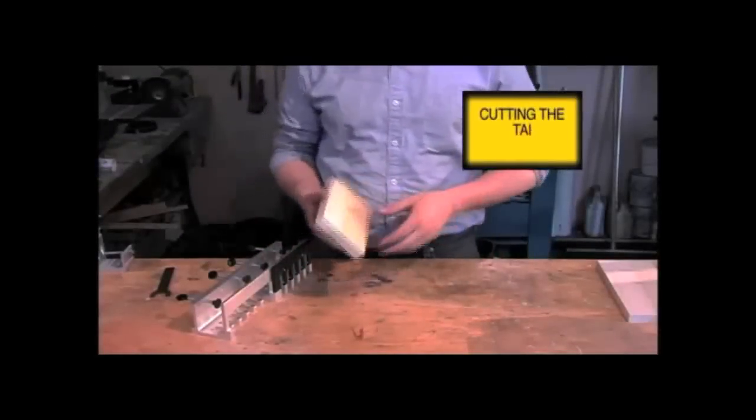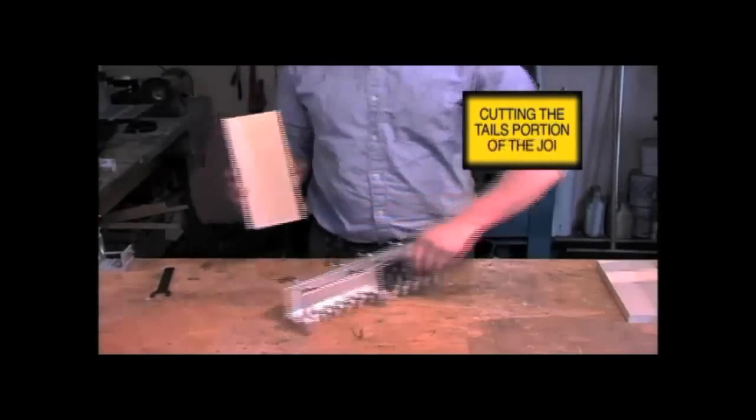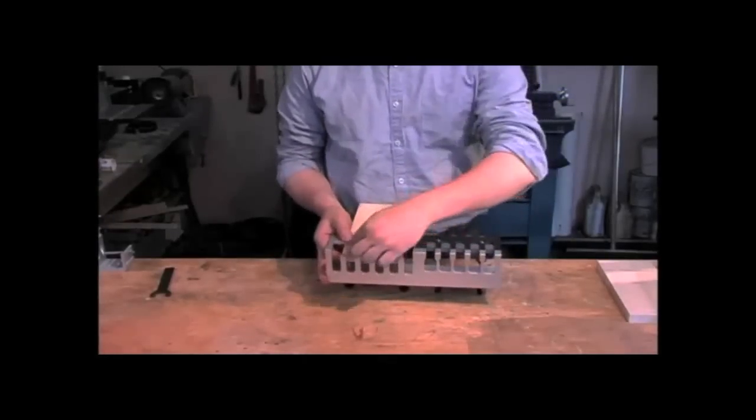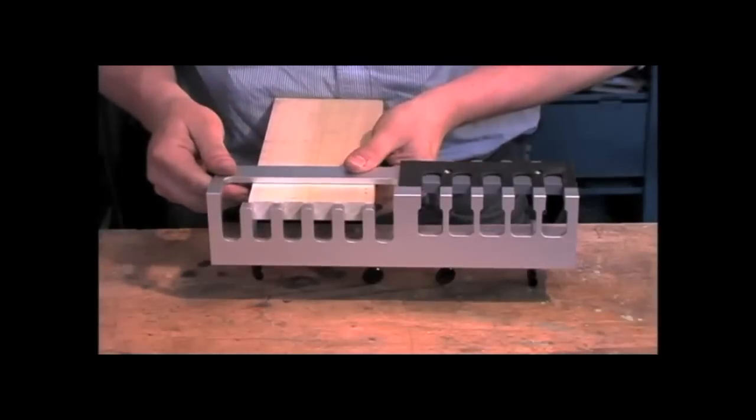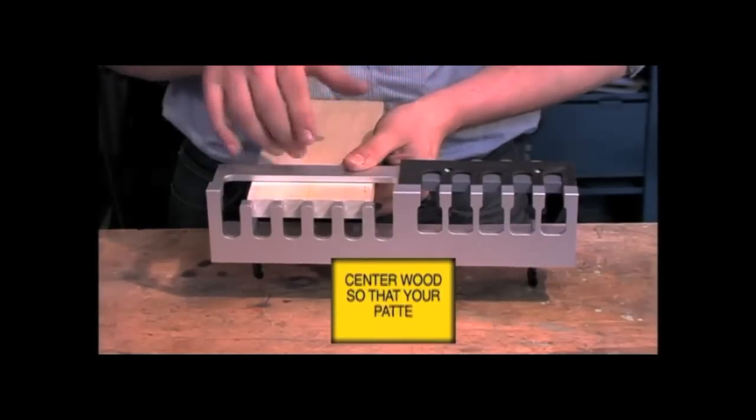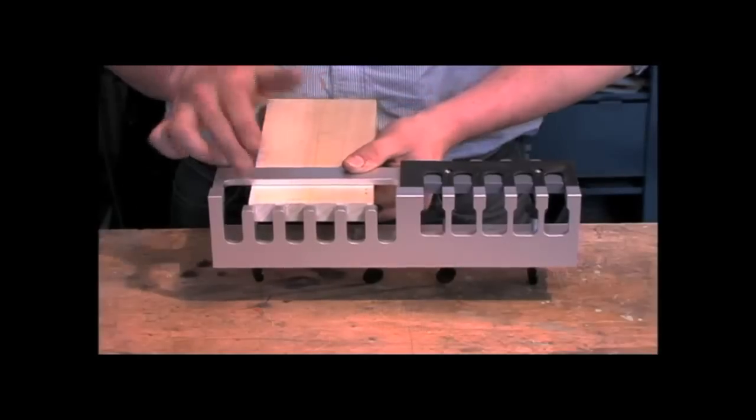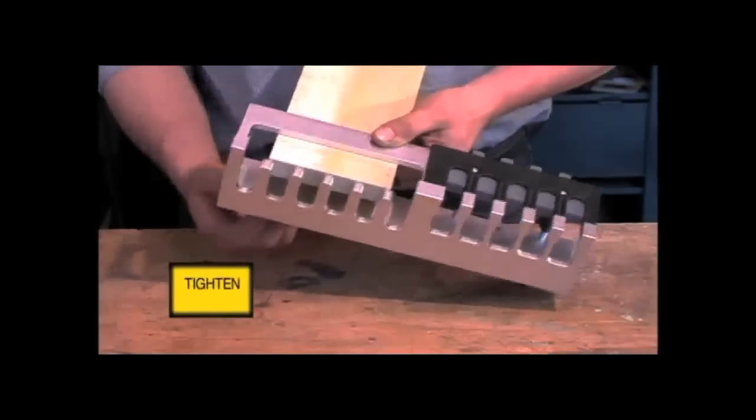So now we'll be cutting the tails portion of the joint. We install the board so that it's centered. We'll center the board in this portion of the jig so that the tails pattern will be centered on the finished piece. And then clamp it down.